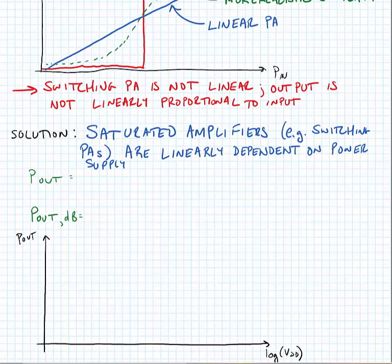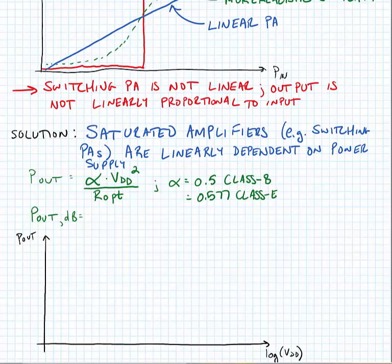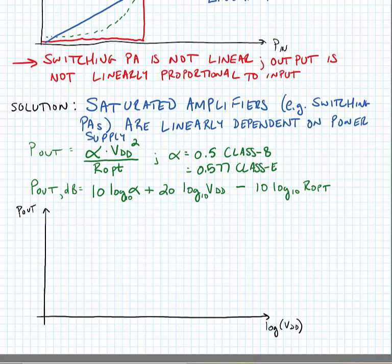We've seen that the output power of a power amplifier is typically proportional to the RMS voltage squared divided by R_opt with some proportionality constant. Alpha is equal to 0.5 for a class B power amplifier or 0.577 for a class E amplifier. We can rewrite this in the log domain, so if we plot the output power versus log of the supply voltage, we see that it's linear - it increases dB for dB.